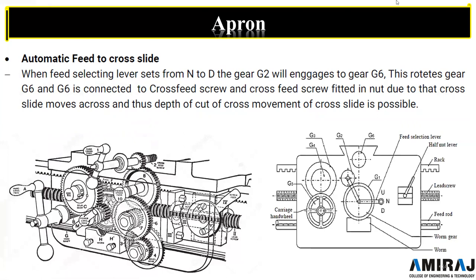For automatic feed to the cross slide: we have the automatic feed for the whole apron, and now to give feed motion to the cross slide, the feed selector lever must go from N position to D position. This engages gear G6 — the gear will engage with G6, and G6 is connected to the cross feed.